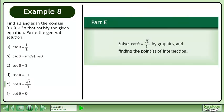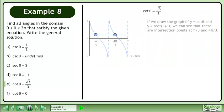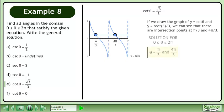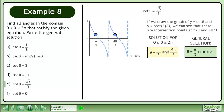In Part E, solve cotangent θ equals root 3 over 3 by graphing and finding the points of intersection. If we draw the graph of y equals cotangent θ and y equals root 3 over 3, we can see that there are intersection points at π over 3 and 4π over 3. The solution for θ between 0 and 2π is θ equals π over 3 and 4π over 3. The general solution is θ equals π over 3 plus nπ, where n belongs to the set of integers.